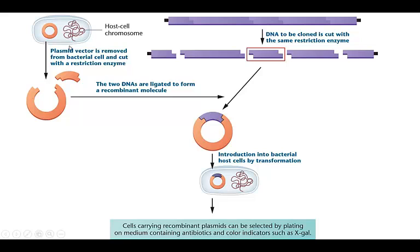So what's going to happen: we've got our plasmid vector, we've cut it with a restriction enzyme, and we've cut the DNA we want to clone with that same or compatible restriction enzyme. You're going to ligate them into your vector — in this case the plasmid — and then introduce them into the host cells by transformation. Transformation is typically accomplished using competent cells. If you heat-shock these cells, they will take up nearby plasmids in just a few minutes. Then you can select for cells containing the plasmid by plating them on medium containing antibiotics and the blue-white color indicators.